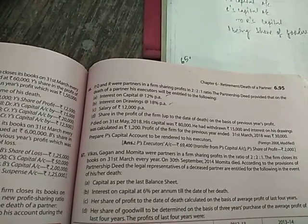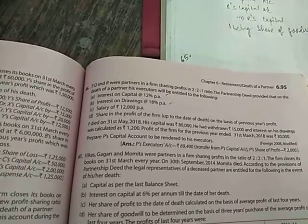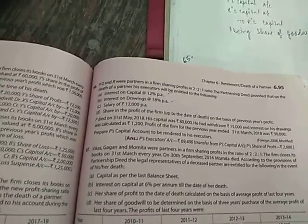Next profit for the firm. Profit of the firm for the previous year ended 31st March 2018 was 30,000. So the profit of the previous year is also given 30,000. In this way we will start the acquisition. The capital balance is 80,000. So here again we will prepare P's capital account because P has died.